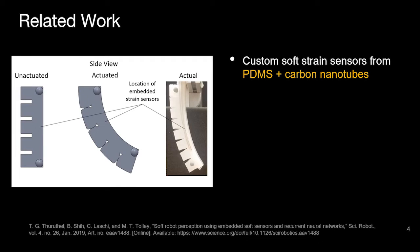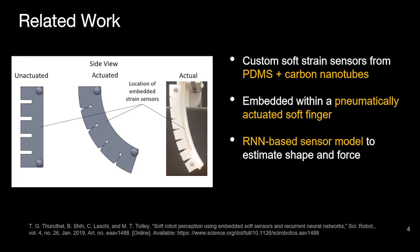Theruthal et al. proposed in 2019 a custom soft-strain sensor made of PDMS and carbon nanotubes embedded within a pneumatically actuated soft robotic finger. They relied on recurrent neural networks to learn the characteristics of this sensor and to thereby estimate the shape of the finger and external forces.